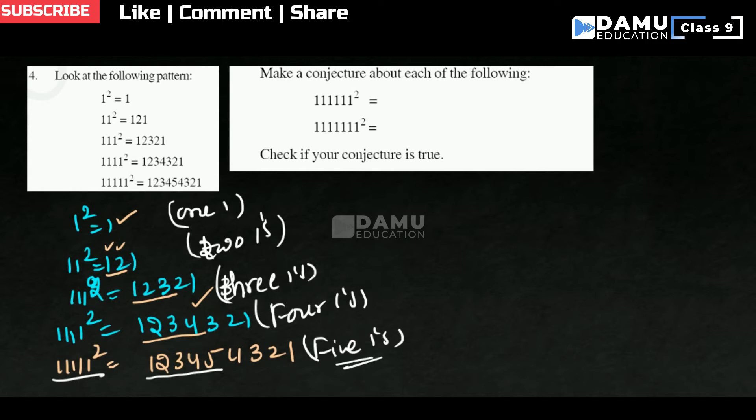Then if you multiply and check it also, we will get the same thing. So here 1, 2, 3. So 3 and 3. For these, what you can write? 6 numbers is there. For that, 1, 2, 3, 4, 5, 6, then 5, 4, 3, 2, 1. For that also we can get it.